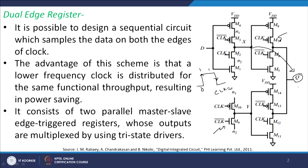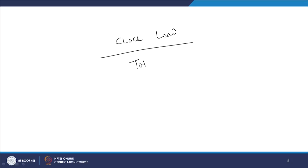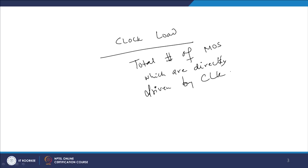This design uses two parallel master-slave latches with tri-state drivers, forming a master-slave edge triggered flip-flop. We define a new term: clock load, which is the total number of transistors directly driven by the clock. Higher clock load means more power dissipation since the clock must do more work. The clock load here is 8, driven by transistors M2, M3, M6, M7, M12, M13, M9, and M10.